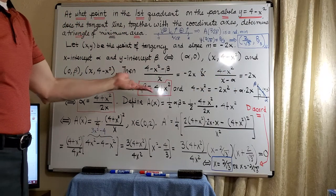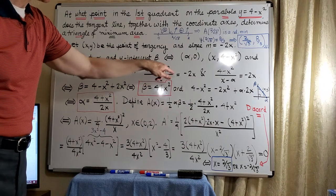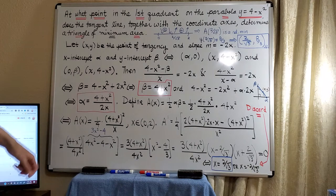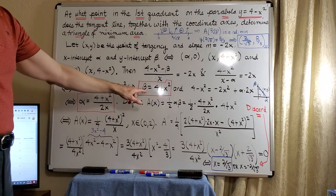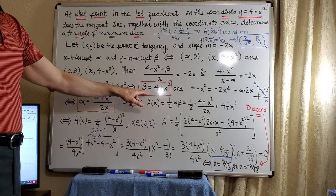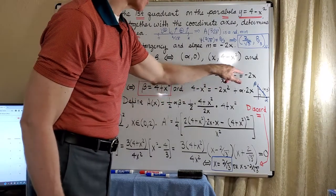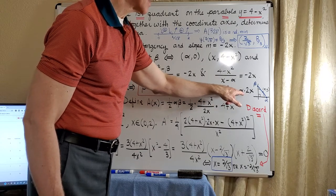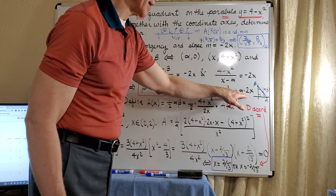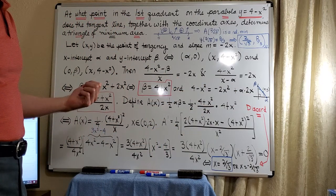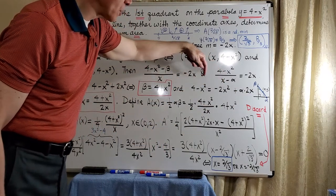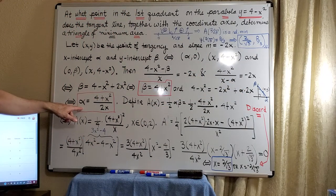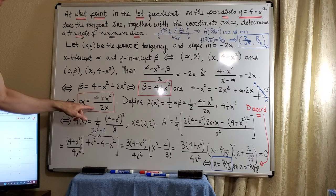To find beta and alpha, we can simply cross-multiply. So we cross-multiply here by x and get -2x², and then we can easily solve for beta. Beta will be 4 + x². Likewise, if we cross-multiply here, we're going to get -2x² + α(2x). Now notice with this particular problem, we'll simply transpose this term and divide by 2x. And when we do that, we get a formula for alpha, which is (4 + x²)/(2x).